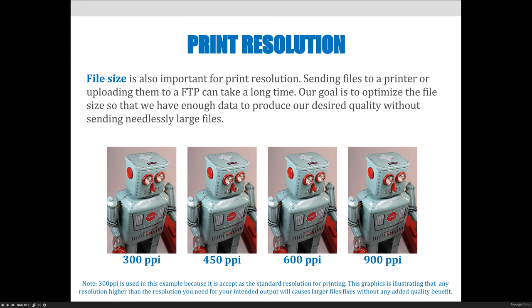We don't want anything larger because anything larger just takes forever to download. Once it's printed, we don't care how big the file was. But if I'm trying to upload a booklet that's 400 pages with eight pictures on every page and each one has 900 PPI resolution, it is going to take forever to download. The download could become corrupt, the connection could break, it could take several hours longer than you anticipate to get files from one place to another. So you want to keep that in mind — we do want a lot of data, but not more than 300 PPI or whatever is determined by the formula.